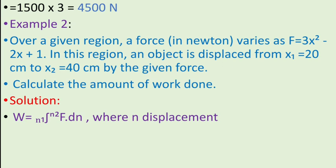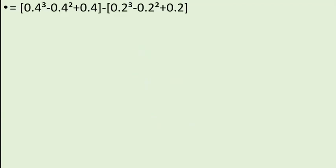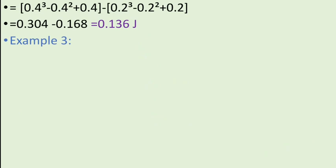Formula for work done is W is equal to integration from n1 to n2 F dn where n is the displacement. After substituting the given values, W is equal to integration from 0.2 to 0.4 in bracket 3x square minus 3x plus 1 into dx. After simplification, we get 0.304 minus 0.168 that is work done W is equal to 0.136 Joule.